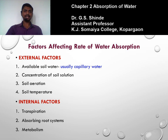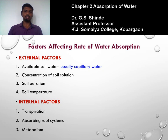The third internal factor is metabolism. In a healthy plant, metabolic activities occur at a higher rate, requiring a large amount of water. Thus absorption rate and metabolism are closely related. Factors that inhibit respiration are also known to affect the absorption of water. To perform various metabolic activities, the plant requires large amounts of water. These are the factors that affect the absorption of water. Thank you, stay home, stay safe.